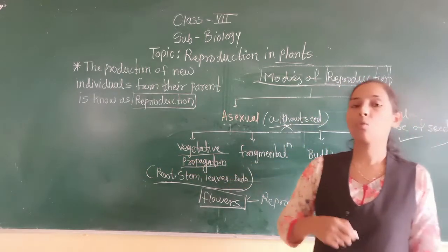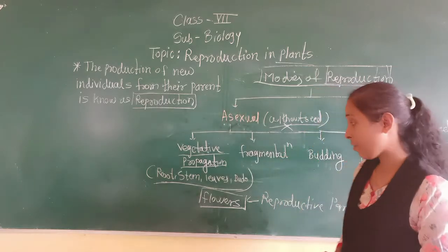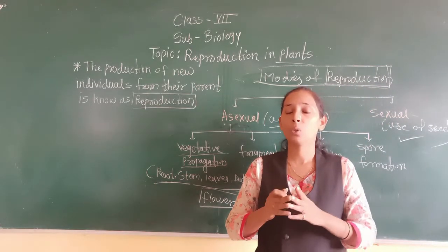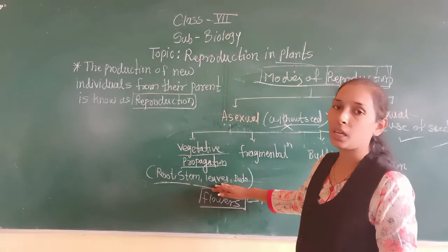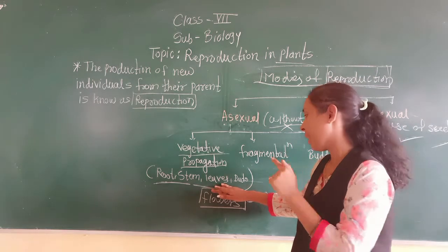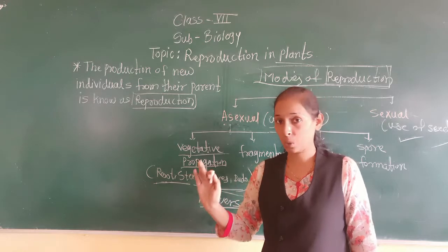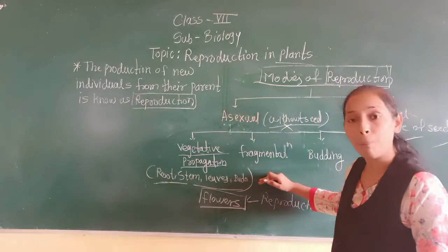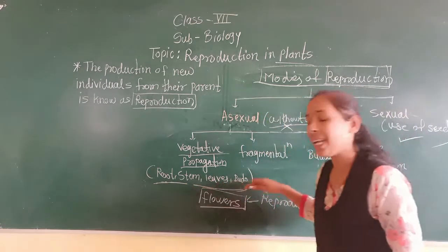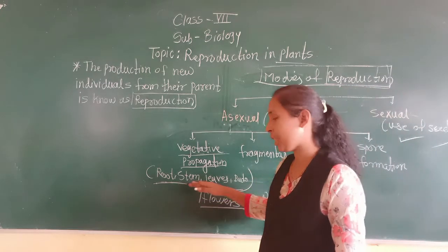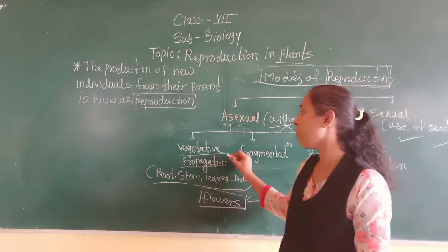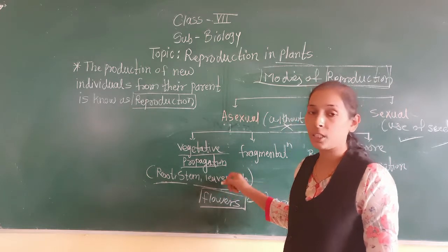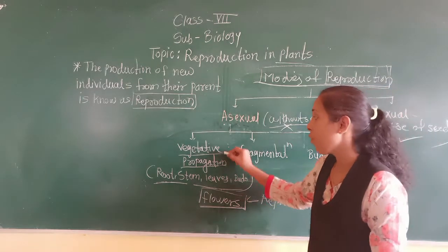Today we will start with the first method of asexual reproduction, that is vegetative propagation. As we know, roots, stems, leaves, and buds are the parts of a plant which help the plant to grow vegetatively — these are the vegetative parts of a plant. In vegetative propagation, reproduction takes place with the help of these vegetative parts: roots, stems, leaves, and buds. That type of reproduction is called vegetative propagation — because vegetative parts are used for the reproduction.